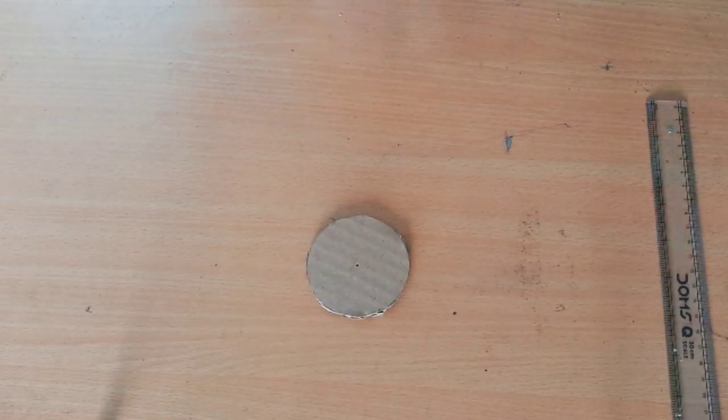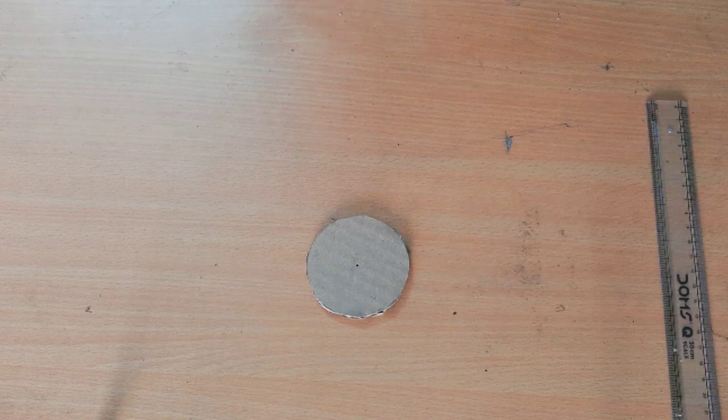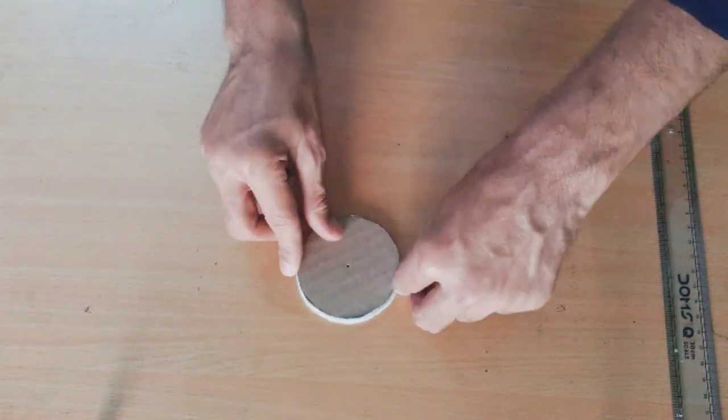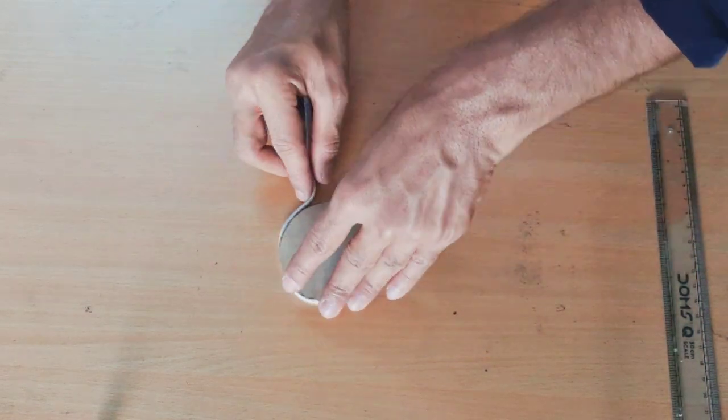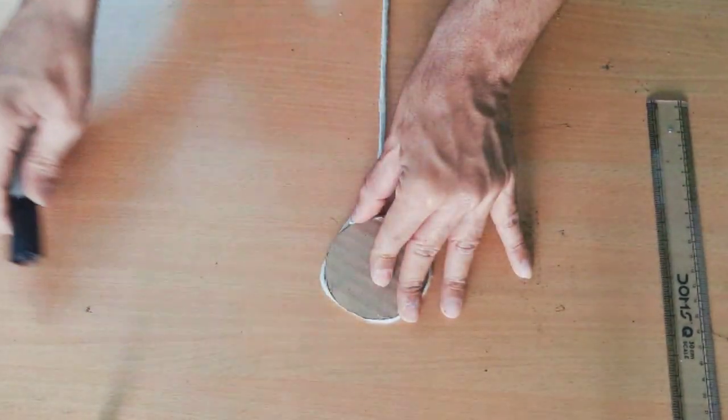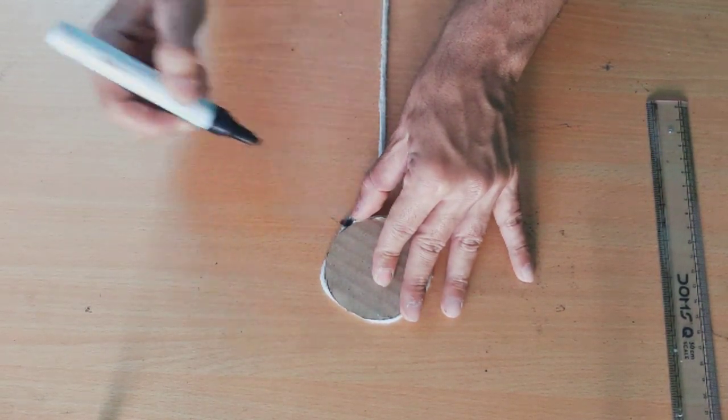This is a small circle, right? Now we have circumference measuring. Now we have to mark it.